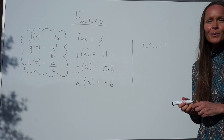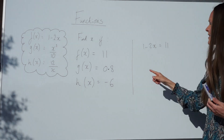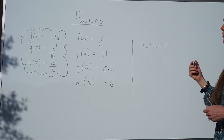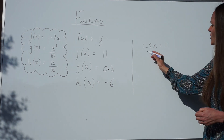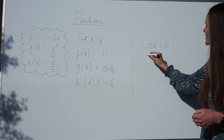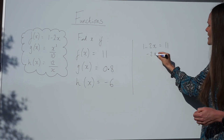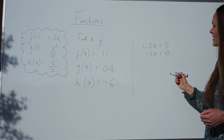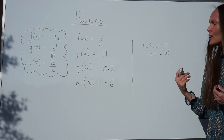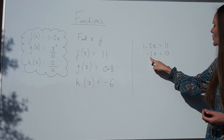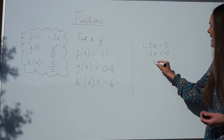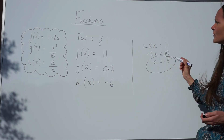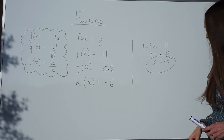Instead of writing f of x, we write down what f of x actually is: 1 minus 2x, and put it equal to 11. To solve this equation, I'm going to subtract 1 on both sides so that I have minus 2x equals 10. Then if I divide both sides by negative 2, I get x is equal to negative 5.